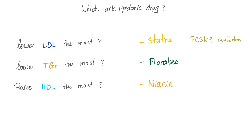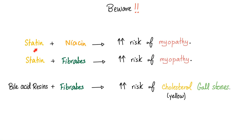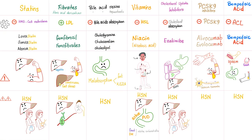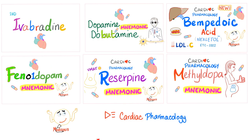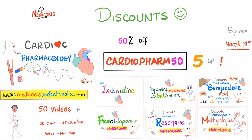Important warnings: statin plus niacin — increased risk of myopathy. Statin plus fibrates — increased risk of myopathy. Bile acid resin plus fibrates — increased risk of cholesterol gallstones. A full comparison table of all lipid-lowering agents is part of the cardiac pharmacology course available at medicosisperfectionellos.com. Use promo code CARDIOPHARM50 for a 50% discount — available for five students only until end of month.